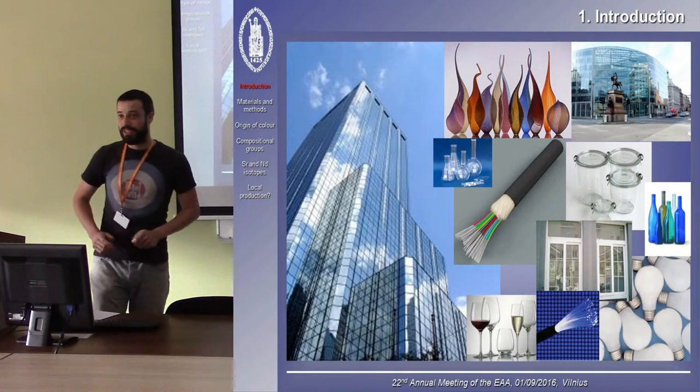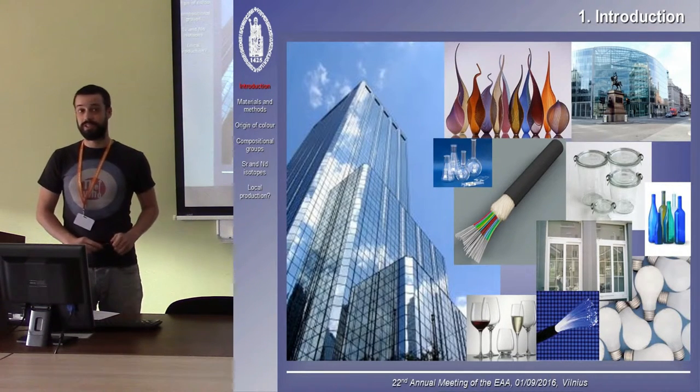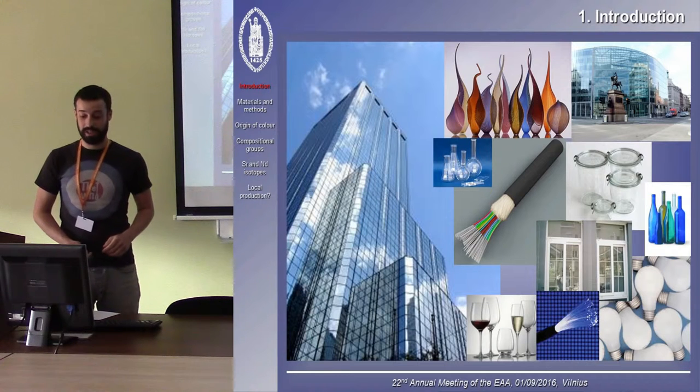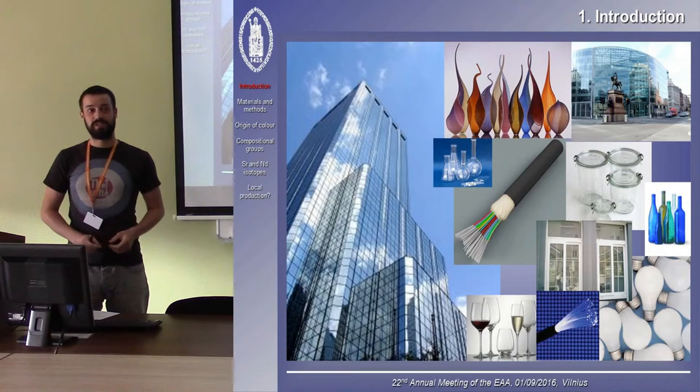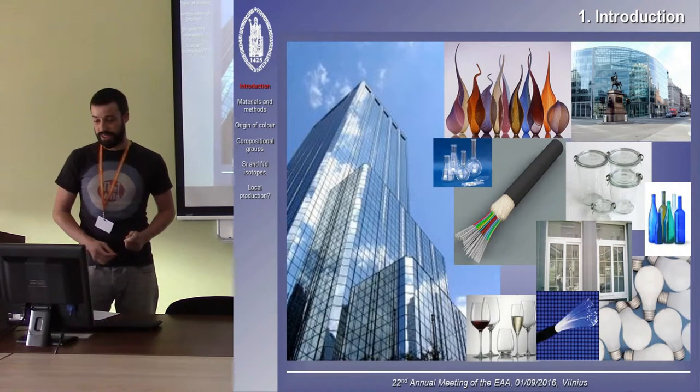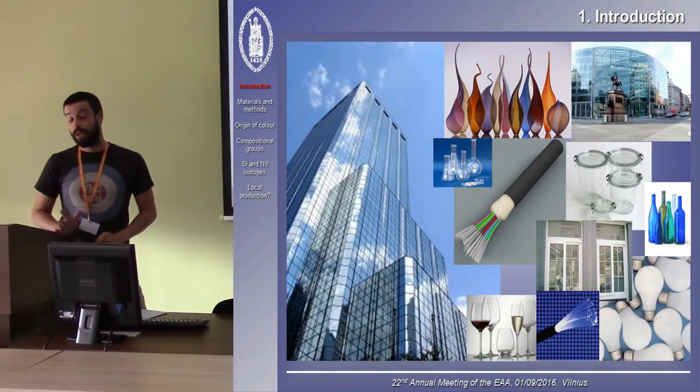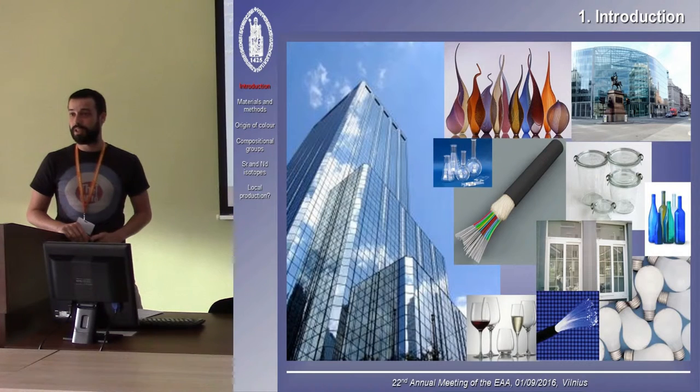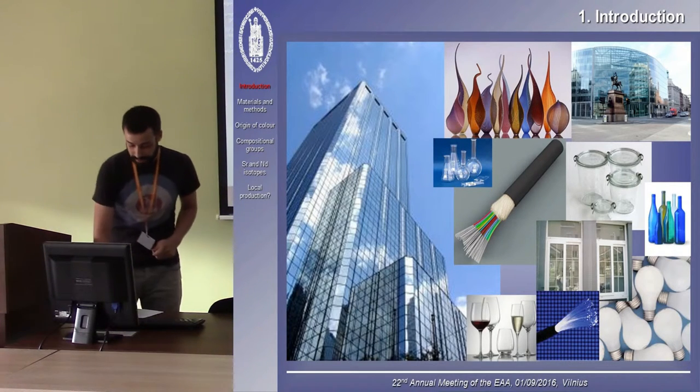Nowadays we see glass everywhere. It is used for a wide variety of applications and produced on an industrial scale, but actually the overall composition of glass hasn't changed much since it was first produced in the third millennium BC. Over the course of history there have been quite a number of different ways to make glass, and I'm going to talk about one type in particular: natron glass.